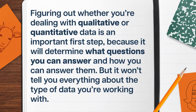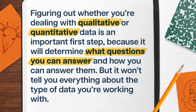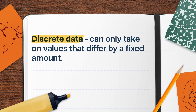Figuring out whether you're dealing with qualitative or quantitative data is an important first step, because it will determine what questions you can answer and how you can answer them. But it won't tell you everything about the type of data you're working with. If we're counting the number of polar bears that come plodding over curiously as we weigh their friends, we know we're working with quantitative data. But in this case, we're also working with discrete data, which can only take on values that differ by a fixed amount — think of when you count 1, 2, 3, and so on.